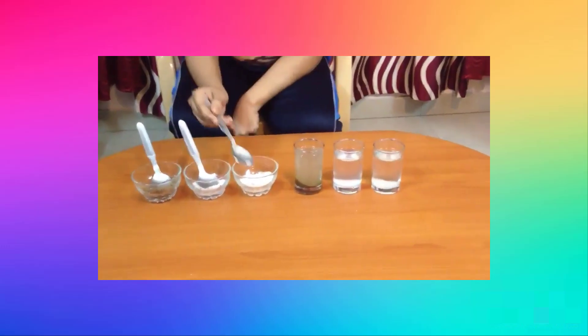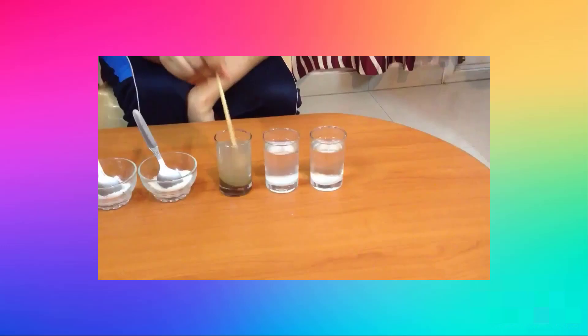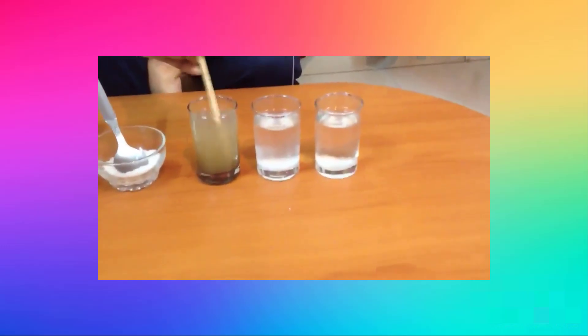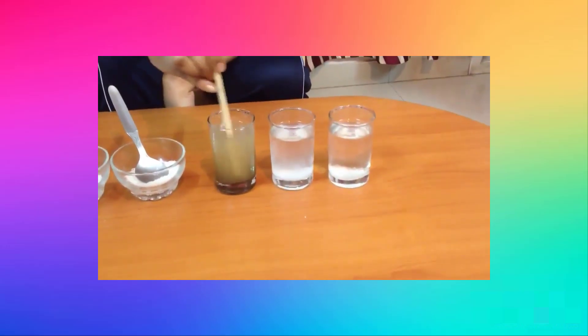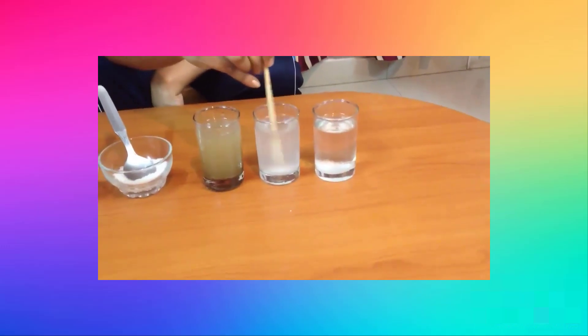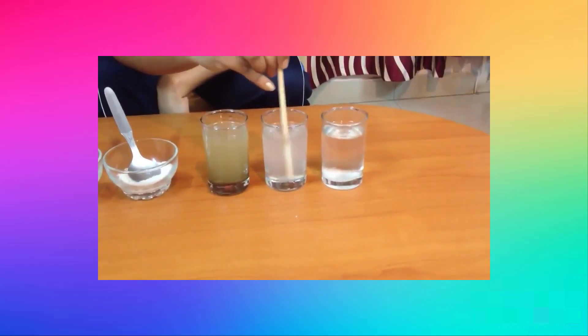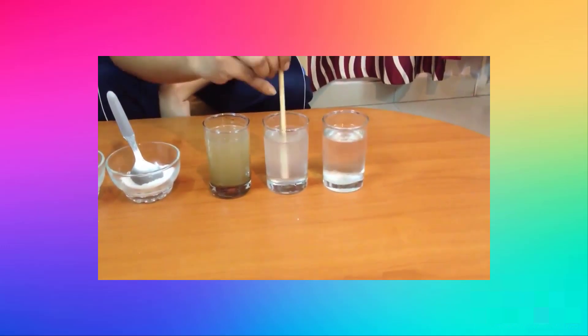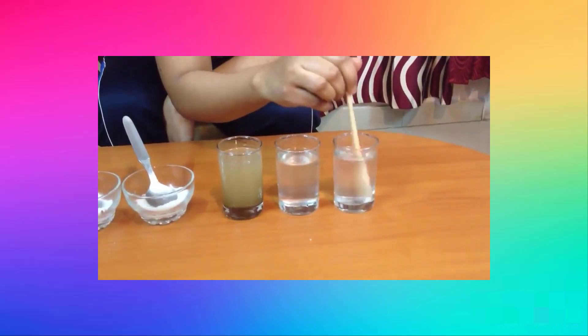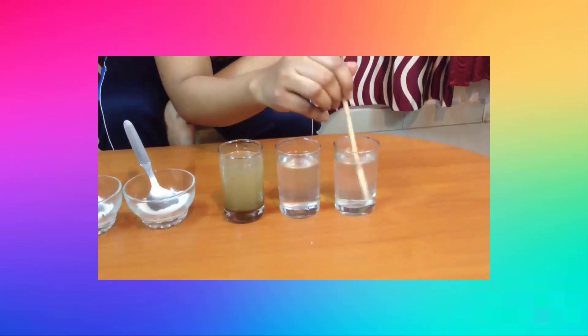Now we will stir the water in all three glasses for some time and see what happens. Salt and sugar cannot be seen because they completely dissolved in water. Sand can be seen settling down because it does not dissolve in water.